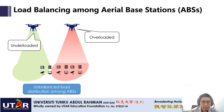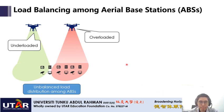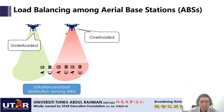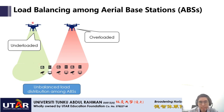3D placement and user association for aerial base stations have been intensively studied with the objective mostly of optimizing network coverage or serving as many users as possible. However, 3D placement and user association are also important for achieving load balance. As shown in this slide, there are two aerial base stations: one is serving quite a large number of users while the other is serving a small number. The aerial base station on the left is underutilized and the other is overutilized, serving too many users, creating an unbalanced load distribution.